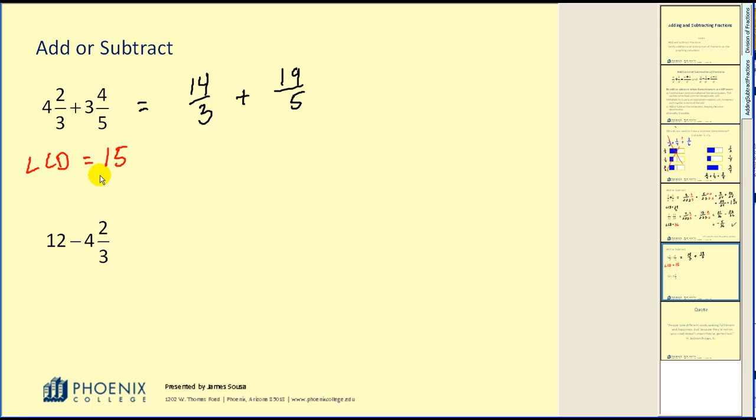If you ever get stuck on finding a common denominator, one method you could use is just multiply the denominators together. It may not be the least common denominator, but it will always be a common denominator. So, what that tells us is if I multiply this fraction by five over five and this fraction by three over three, I would have a common denominator of fifteen. Okay, so we'd have seventy-fifteenths plus fifty-seven-fifteenths. We have our common denominator. We can go ahead and add these two fractions together.